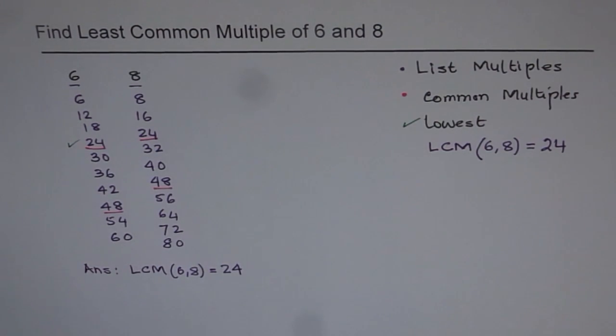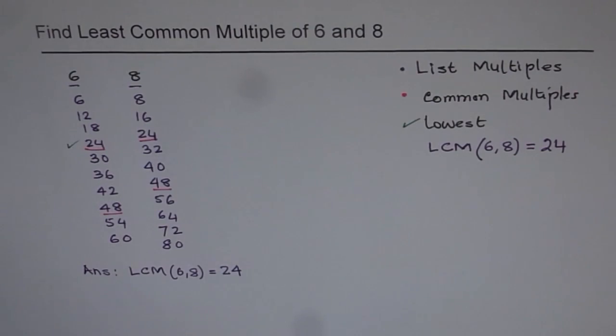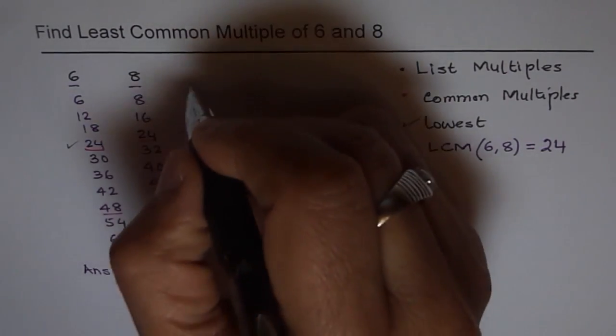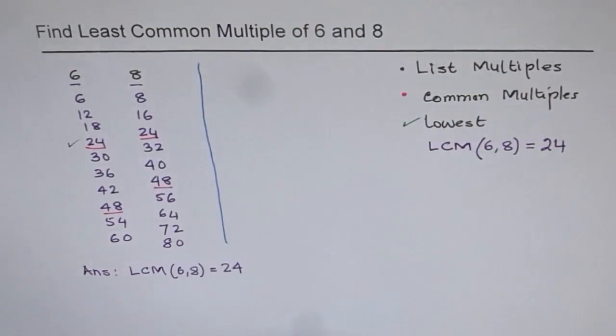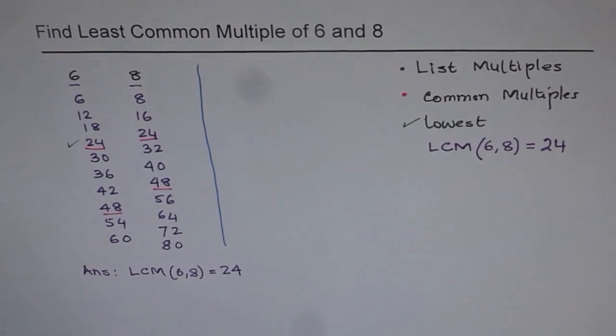But it can at times take a lot of time, right? If there are numbers where the least common multiple is very high, in that case, imagine how long this list is going to be. So that is one disadvantage. But it is a simple and straightforward method, and it can always be applied, whether there are two numbers or three numbers.